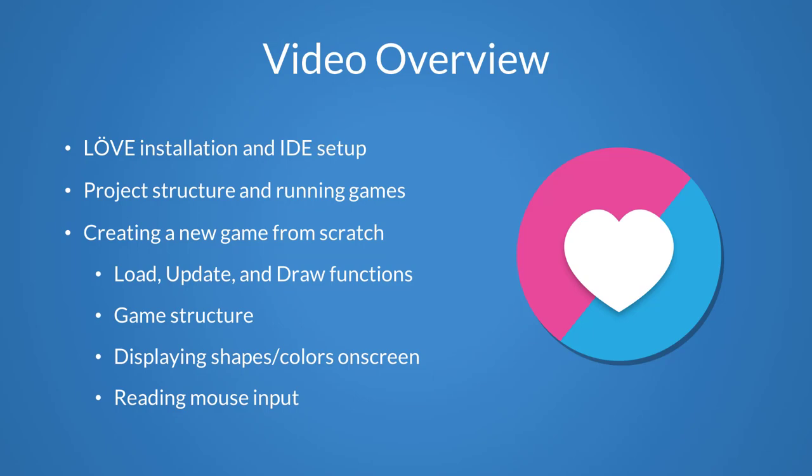While working on this game, we'll go over some key features of Love, including the core load, update, and draw functions, getting the structure of our game set up, displaying shapes, modifying colors, and reading mouse input from the player. Covering these basic concepts will give you a great understanding of how Love works as a whole. So when you're ready, let's get started.